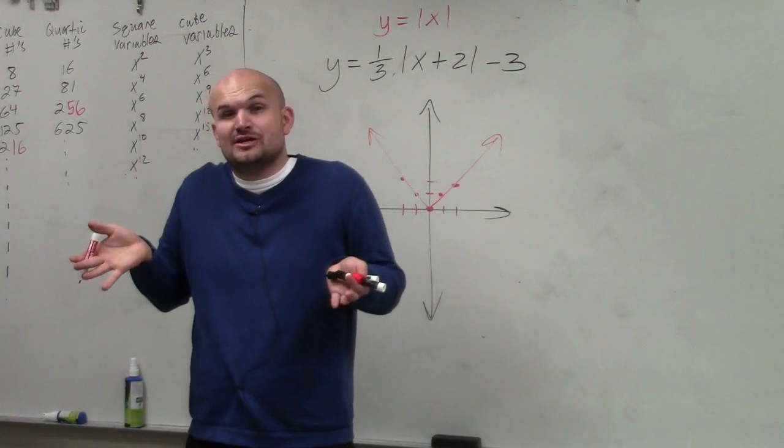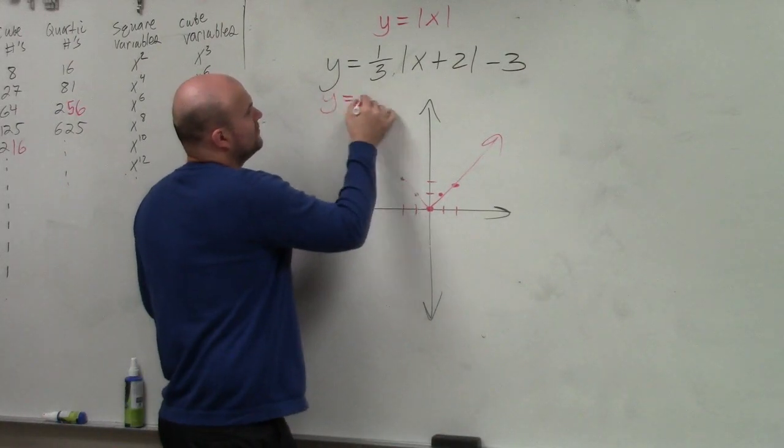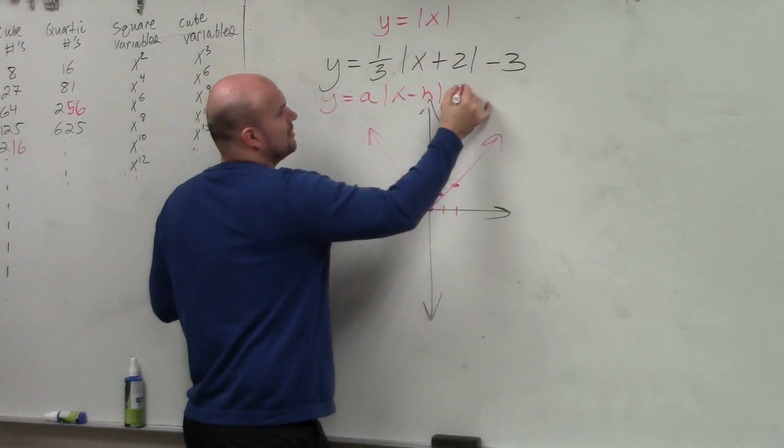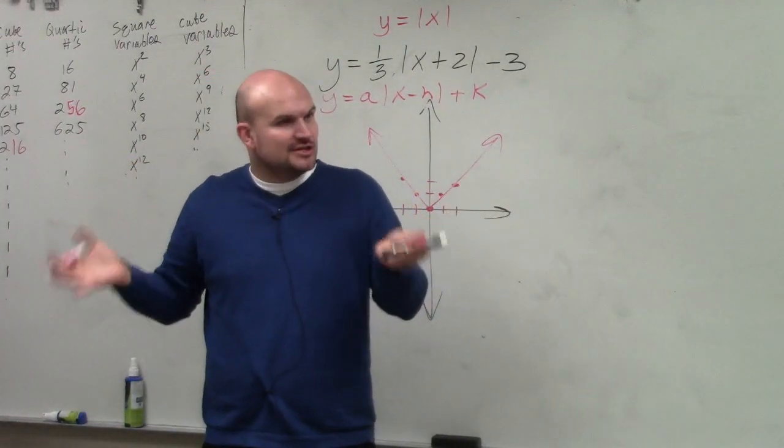Now the next thing you need to understand is transformations. We talked about this in class. y equals a times the absolute value of x minus h plus k. We need to remember what a, h, and k do.